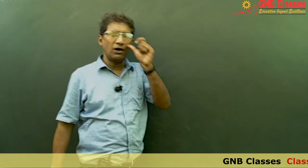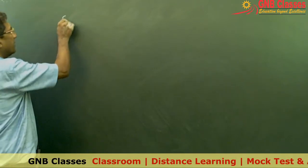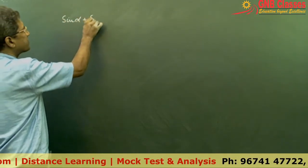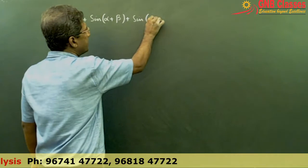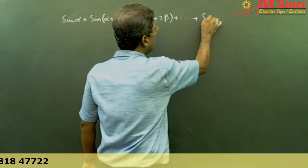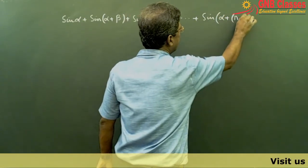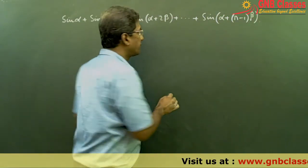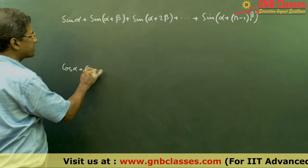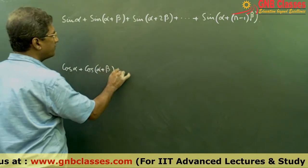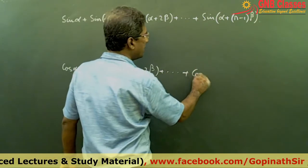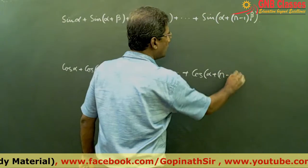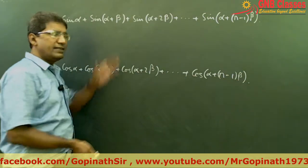Now let us discuss the sum of sine and cosine series. The sine series is: sin α plus sin(α+β) plus sin(α+2β) and so on up to n terms, ending with cos(α plus n minus 1 times β). Similarly, the cosine series is: cos α plus cos(α+β) plus cos(α+2β) up to n terms, also ending with cos(α plus n minus 1 times β).